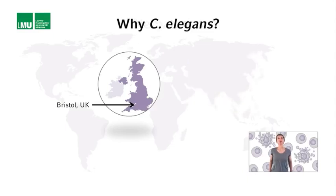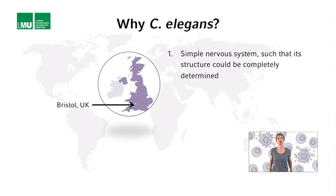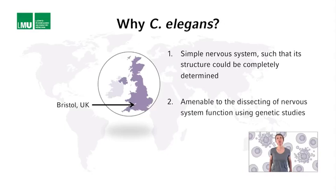Why did Sidney Brenner choose C. elegans as a model organism? Sidney Brenner was interested in the nervous system, and he thought that for choosing a good model organism, two criteria were particularly important. First, the organism should have a simple nervous system — so simple that its structure could be completely determined. Second, the organism should be amenable to the dissection of nervous system function using genetic studies.